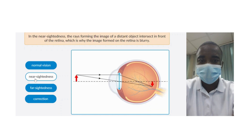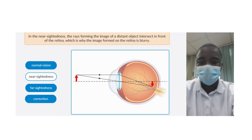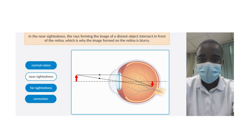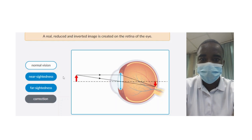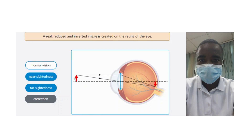The simulation provides an interactive platform where students can actively engage with the concept of the human eye. By exploring the inner parts of the eye and understanding vision disorders, students can gain a deeper understanding of the anatomy and physiology of the eye. The visual nature of the simulation makes abstract concepts more tangible. Students can observe the structure and function of the vitreous body, retina, and yellow spot, as well as the mechanics of normal vision, nearsightedness, and farsightedness in real time.